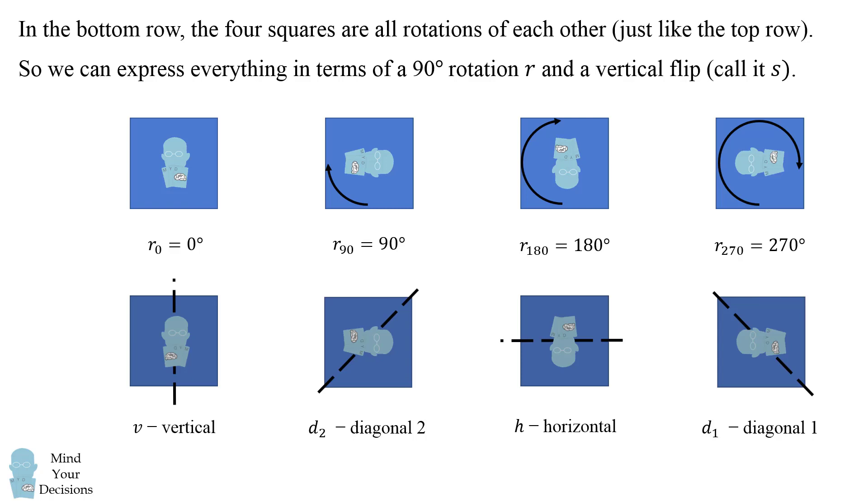So the top row, we start out by having a 90 degree rotation being labeled R. A 180 degree rotation is two 90 degree rotations which is R times R or R squared. A 270 degree rotation is rotating by 90 degrees three times or R cubed. Finally, a rotation of 0 degrees we'll call 1 or the identity element.